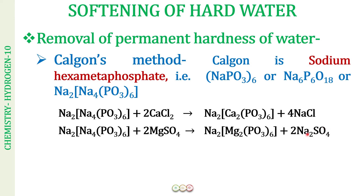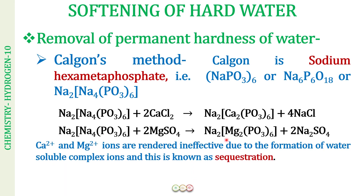The next method to remove permanent hardness is called the Calgon's method — a memory aid: 'Cal is gone,' meaning calcium disappears. Calgon is a trade name for sodium hexametaphosphate, with the formula (NaPO3)6, which can also be written as Na6P6O18 or as the complex salt Na2[Na4(PO3)6]. The calcium or magnesium ions go into complex ion formation with the phosphate, forming water-soluble complex ions and rendering them ineffective. This process is called sequestration.